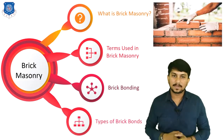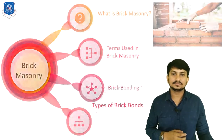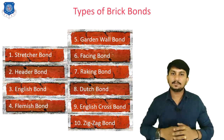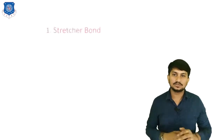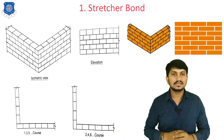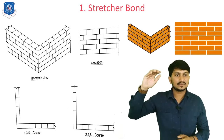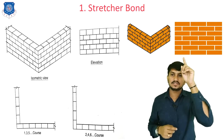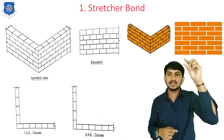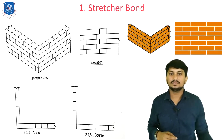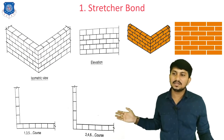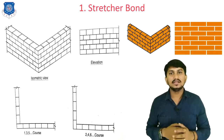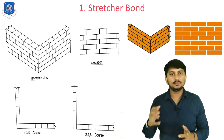Now let's discuss the various types of bonds used in brick masonry. There are a total of ten types of brick bonds. First is stretcher bond — in stretcher bond, all the layers are made with stretchers, which are the lengthwise bricks. This type of bond is mainly used for partition walls when the thickness of the wall is about half a brick or one brick.